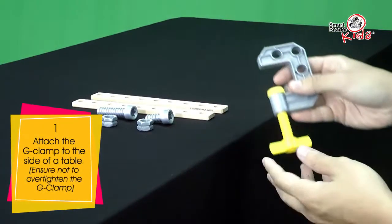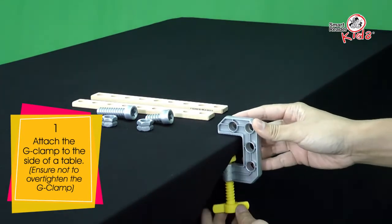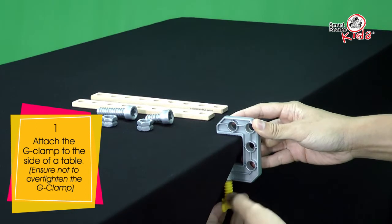Attach the G-clamp to the side of a table. Ensure not to over tighten the G-clamp.